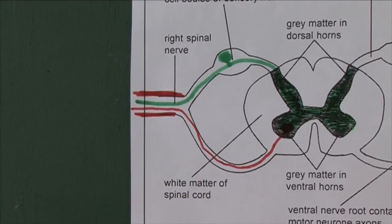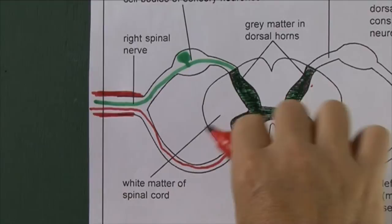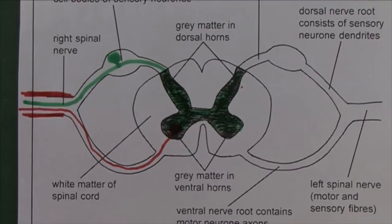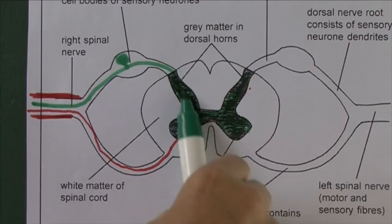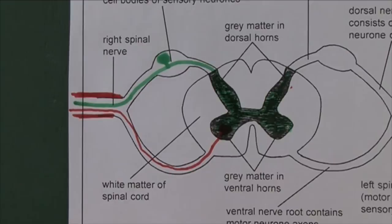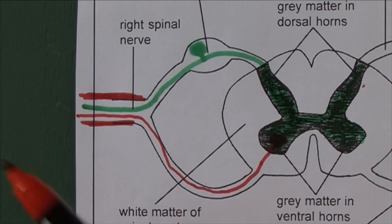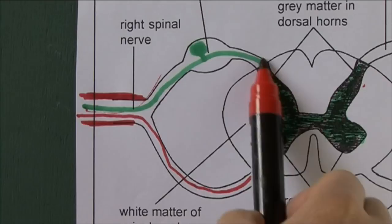There is grey matter in the dorsal horns where impulses are coming in, and grey matter in the ventral or anterior horns where the motor neuron cell bodies are. Impulses going in are called afferent impulses — the sensory neuron is afferent, carrying information towards the spinal cord, which is part of the central nervous system. Fibres carrying impulses out are called efferents. So: afferent going in, efferent for exit — sensory neurons are afferents, motor neurons are efferents.